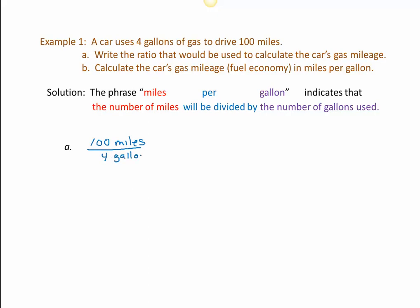It has nothing to do with which quantity comes first in the description, and everything to do with the way the units are being talked about, miles per gallon. To actually calculate the car's gas mileage, then all we have to do is divide. And 100 divided by 4 is certainly 25, and then we would abbreviate miles per gallon, just like that.